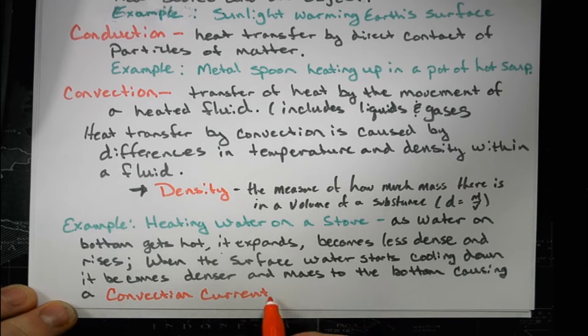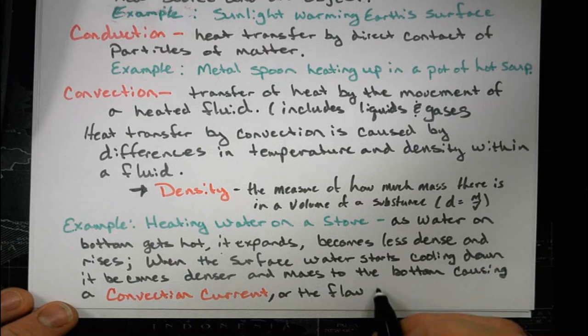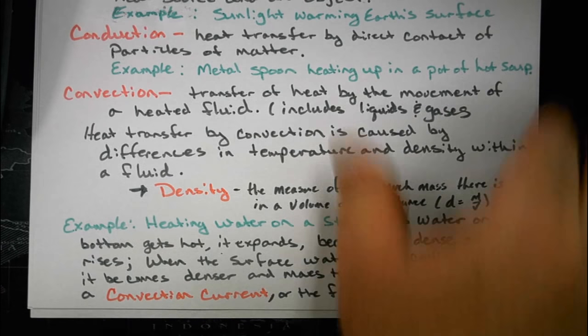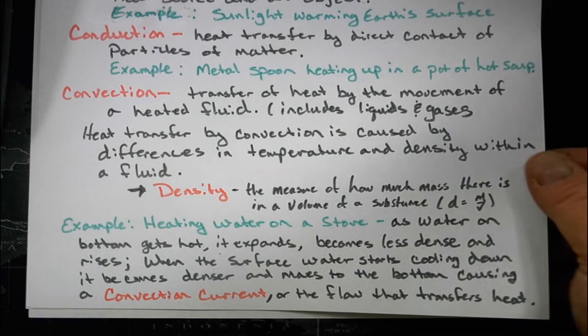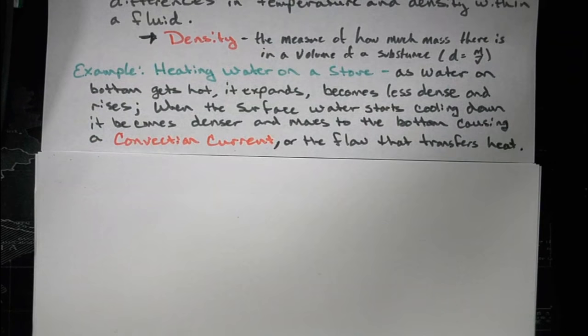This causes a convection current or the flow that transfers heat. We saw this when we mixed the red and blue waters and created a warm layer on top and a blue layer on bottom. If the heat source is on the bottom, then you have a motion of the water that creates this current.